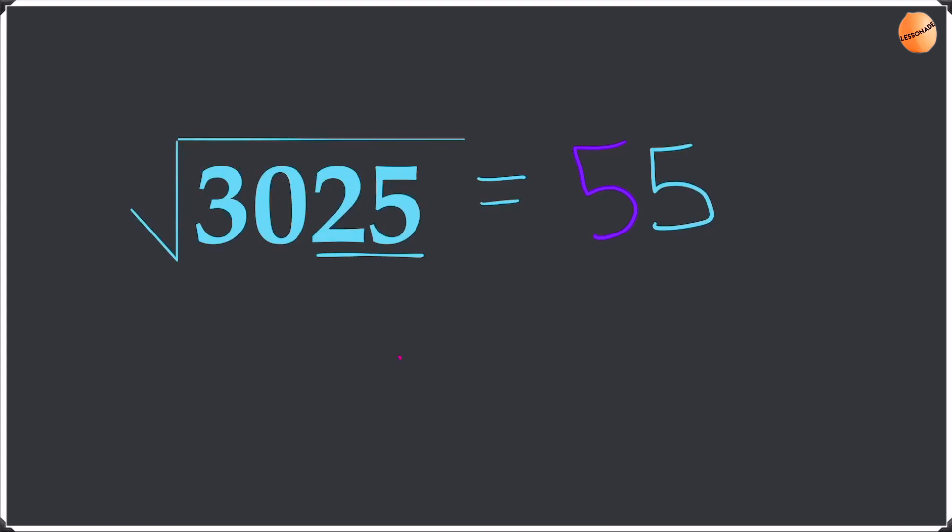That gives us an answer of 55. So the square root of 3025 is 55.